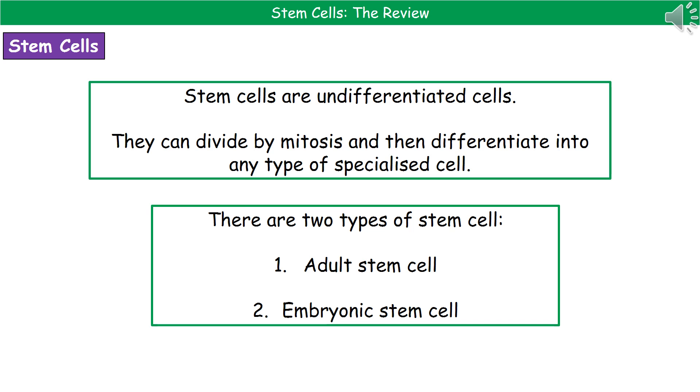There are two types of stem cells: adult stem cells and embryonic stem cells.